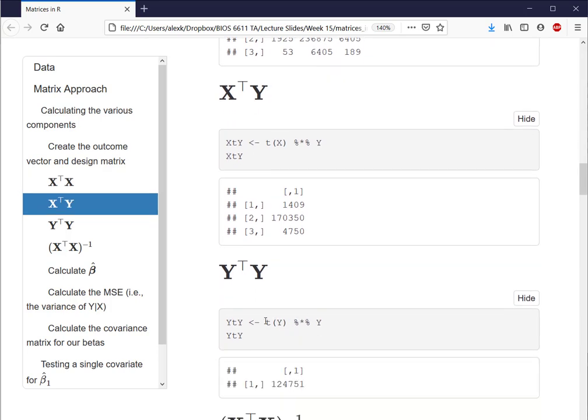For Y transpose Y, we similarly will just replace the related information we need, where it's the transpose of Y to make it a row vector times then the column vector of Y, which together then replicates that process we noted in the slides, of really squaring each one of our outcomes and adding them all together. But here instead of having to square them separately and then sum them up, in this vector or matrix approach, we can use this one line of code to do it all automatically.